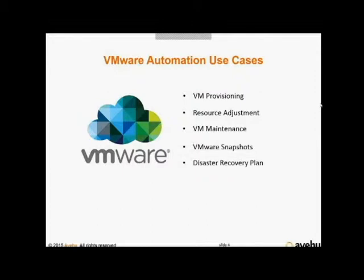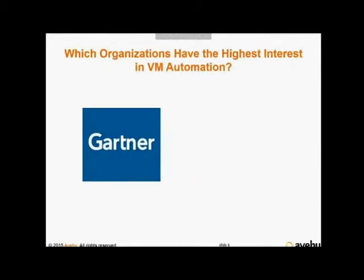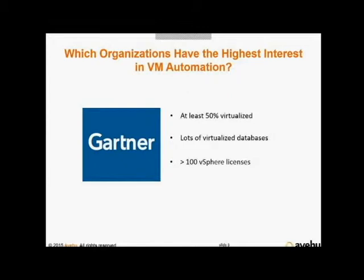Finance, healthcare, utilities, and government organizations in particular have the most stringent requirements for business continuity in the event of a disaster. According to a Gartner analyst we spoke with at VMworld, organizations most interested in automating their VMware environments are at least 50% virtualized, using a lot of virtualized databases, and typically have more than 100 vSphere licenses. Organizations with these characteristics stand to benefit the most from adding automation to their VMware infrastructure.